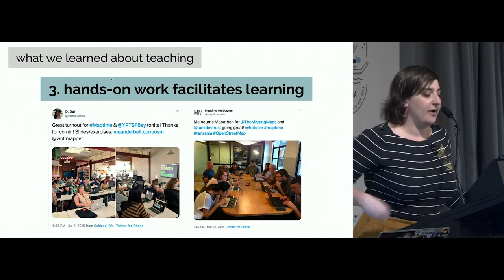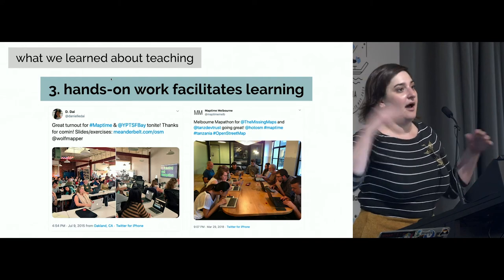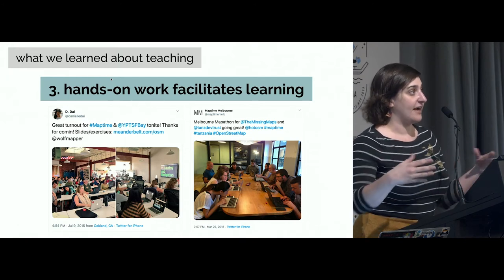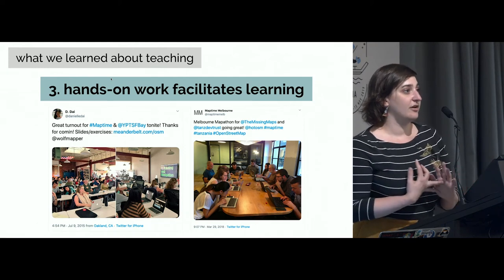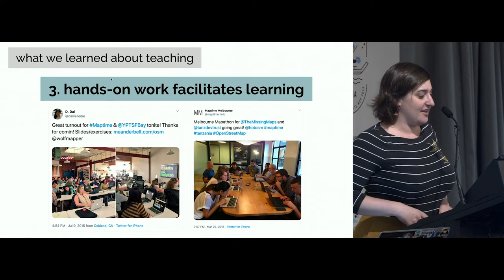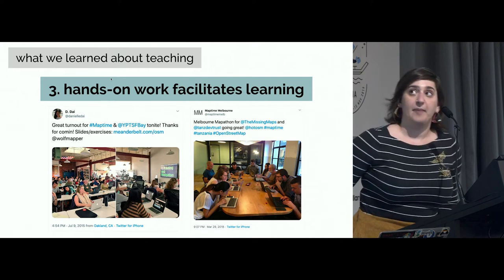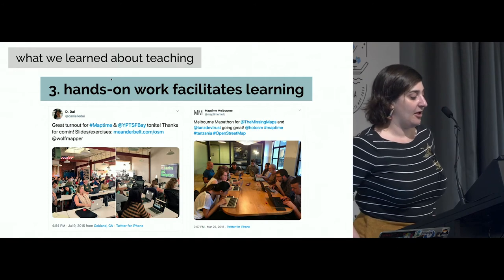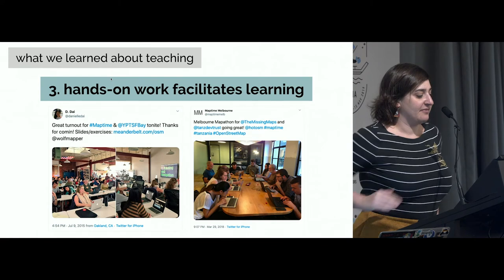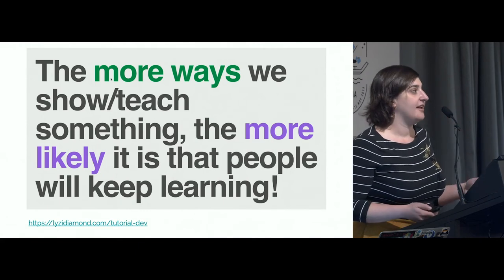Another key lesson was that hands-on work facilitates learning. A lot of geo meetups at the time were just lecture-less in format or leader-less hacknights. By giving people something directed to work on, you get to see firsthand what works and what doesn't, and people get that nice dopamine hit of 'I did a thing and it worked.' MapTime San Francisco used the old Mapbox office, and MapTime Melbourne did a Missing Maps marathon in 2018 — photos of everybody on their computers brings me such joy. The more ways we can show or teach something, the more likely people are to stay excited and keep learning.